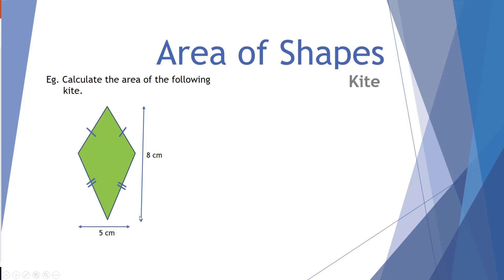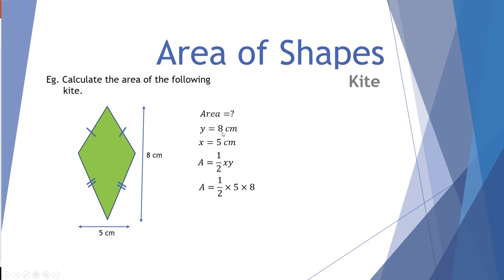An example: a kite with a height of 8 and a base of 5. Area equals question mark. The height (vertical) is 8 centimeters, the base (horizontal) is 5. Our equation is area equals half x times y. Half times 5 times 8 gives 20 centimeters squared.